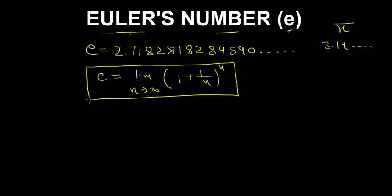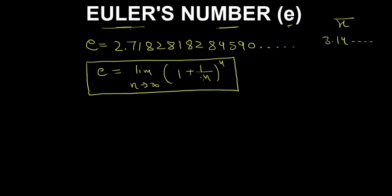Leonard Euler never actually found this number using this method. He used a series method which looks like this: e equals the summation from n equals 0 to infinity of 1 over n factorial. This is how Euler deduced Euler's number.